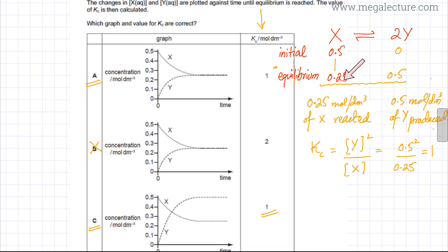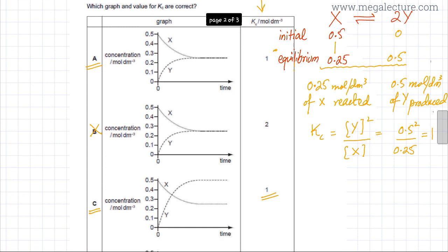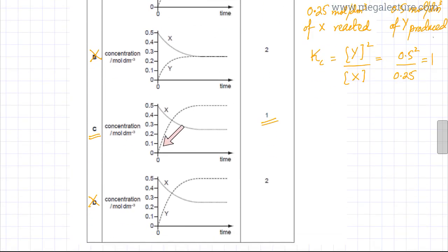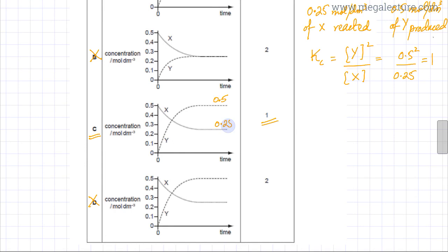The concentration of X falls from 0.5 to 0.25, whereas the concentration of Y, initially 0, rises to 0.5. Looking at option C, Y starts at 0 and rises to 0.5, and X starts at 0.5 and falls to 0.25 — this is the point where equilibrium is reached and concentrations become constant. So option C is the correct answer, as both the graph and the calculated value of Kc are correct.